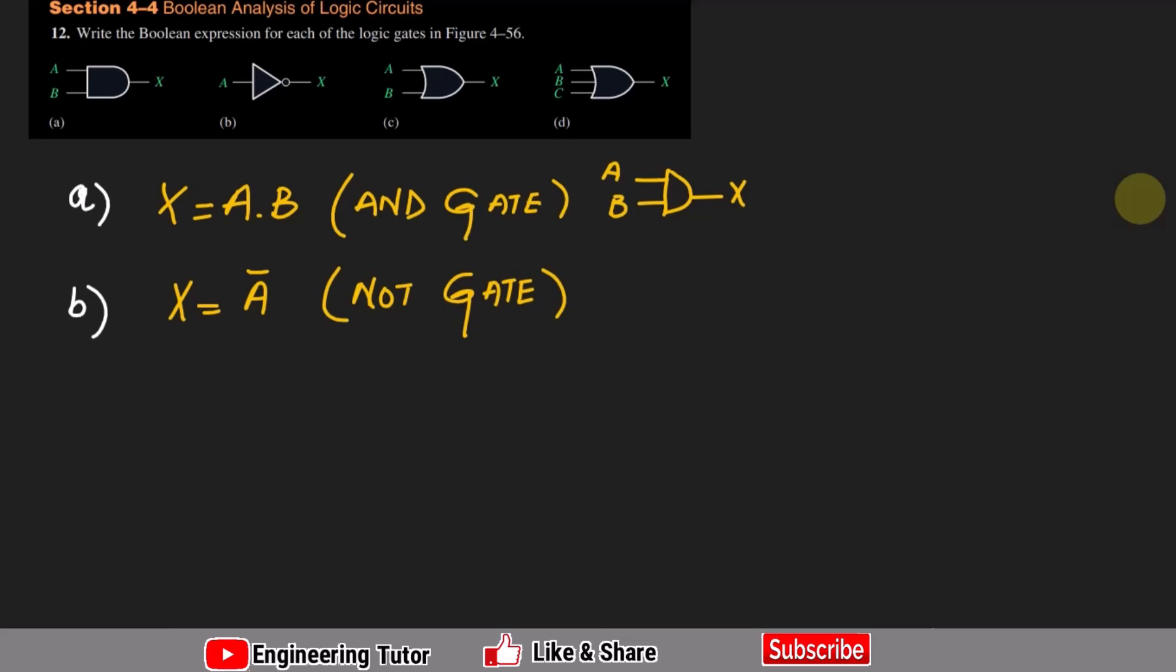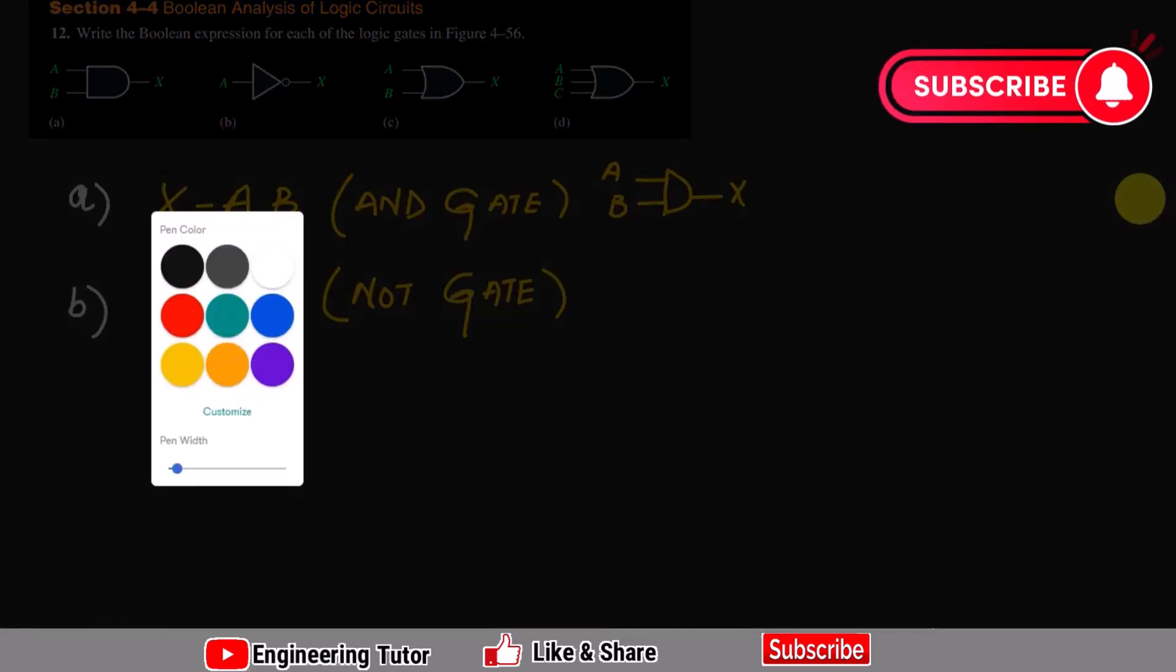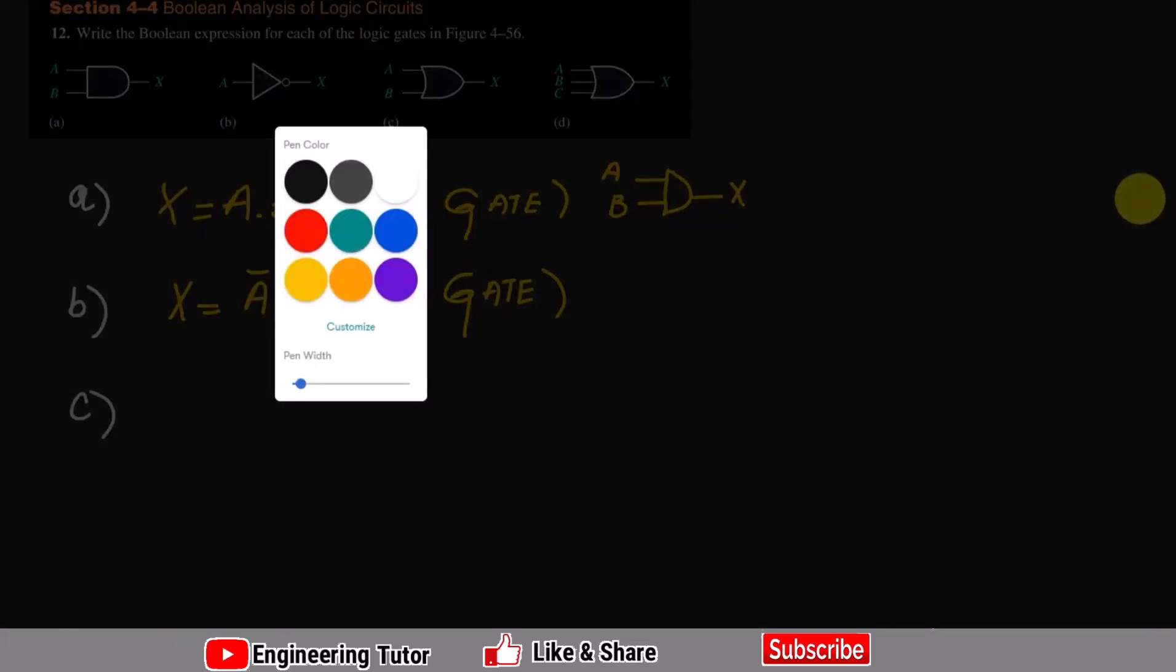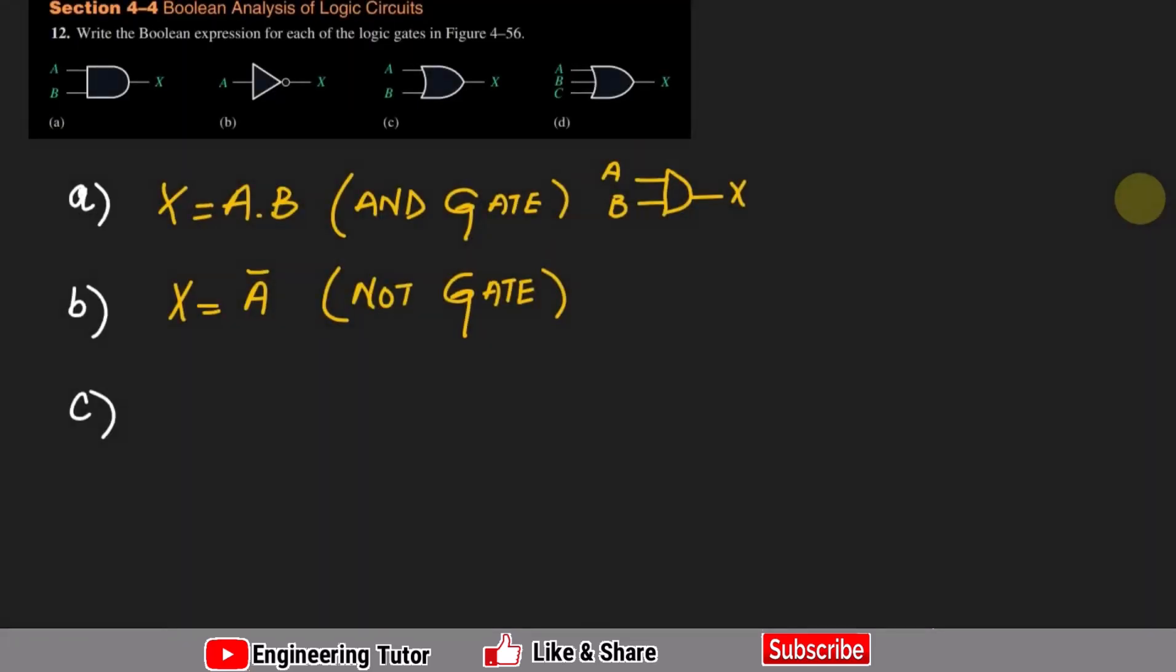And this bubble basically shows us the complement operation which has been performed here and that is the essence of this NOT gate or inverter. Part C, what is this? This is basically another type of circuit and we have seen in our theory section that this is called OR gate.